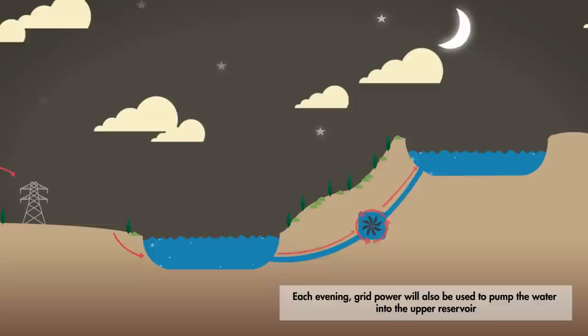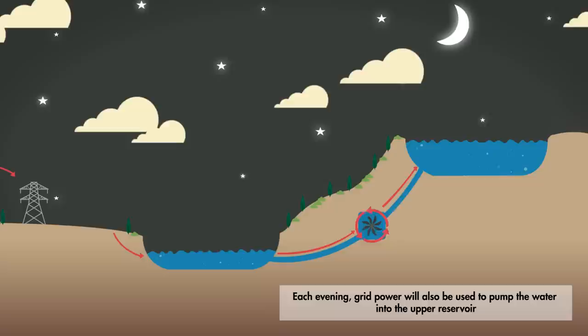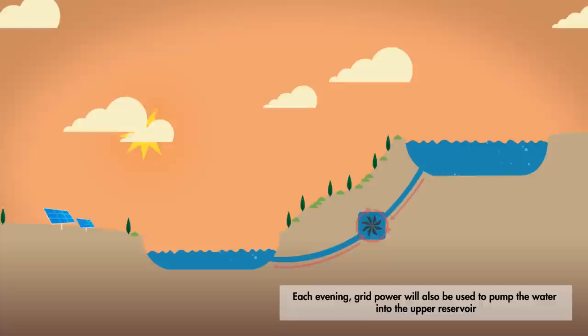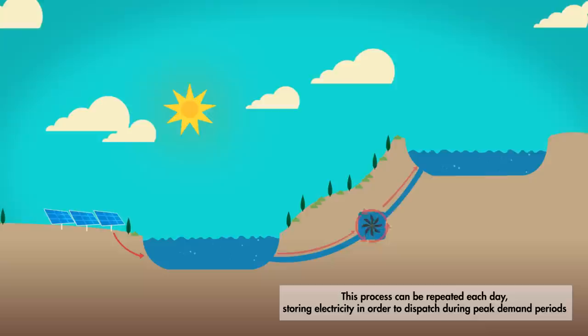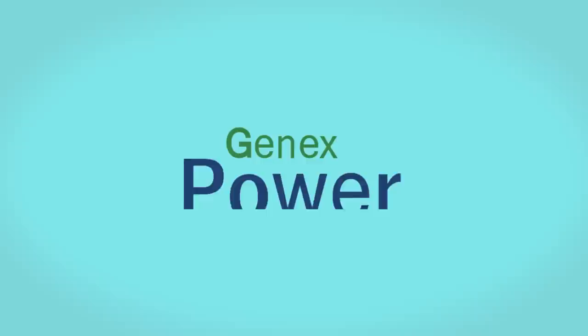Each evening, grid power will also be used to pump the water into the upper reservoir. This process can be repeated each day, storing electricity in order to dispatch during peak demand periods.